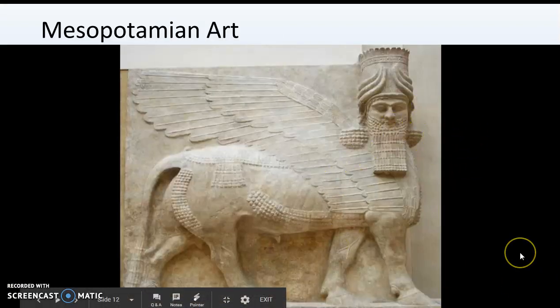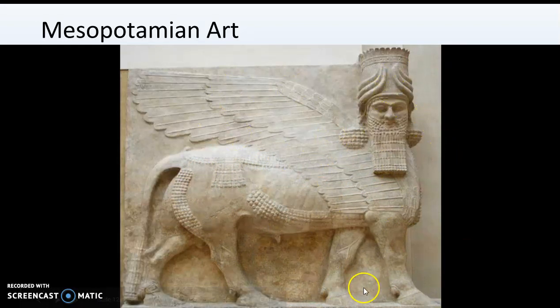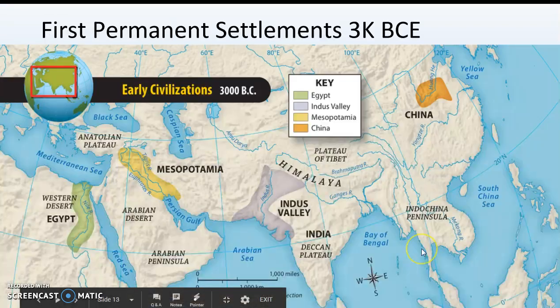This is Mesopotamian art — a stone carving of one of their gods. Notice that he is part bull, part eagle, and part human, which is kind of unusual. Notice how intricate the carving is — you can really make out the different characteristics of the god.